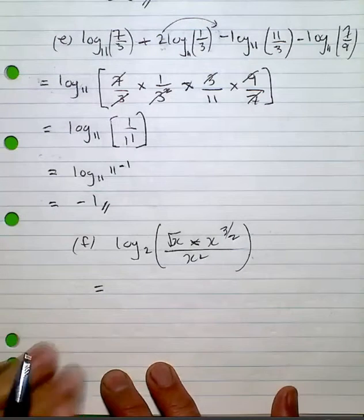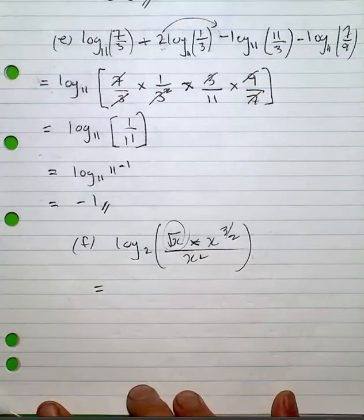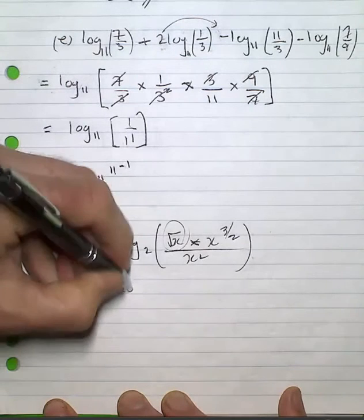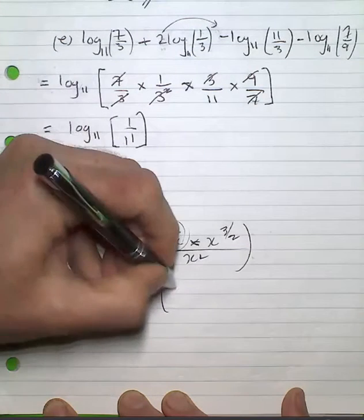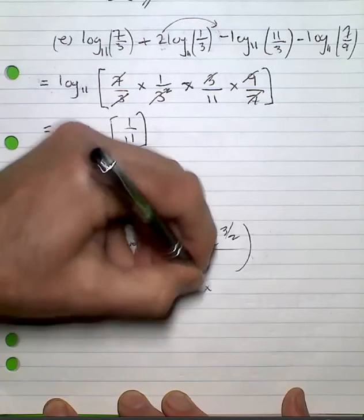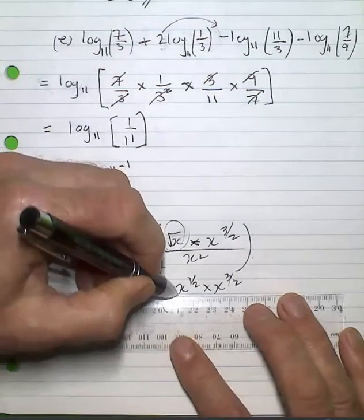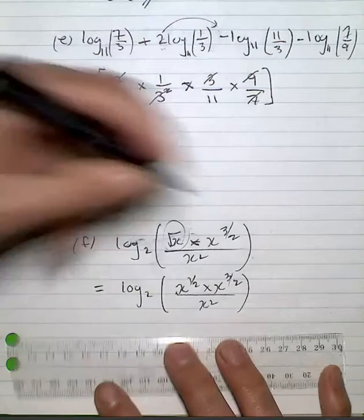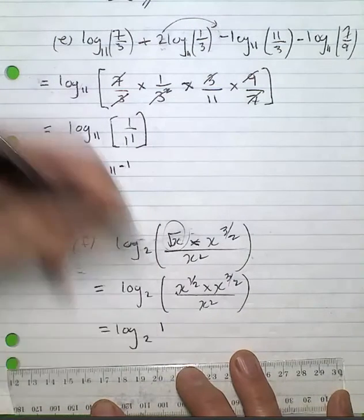Now, the next problem, you notice I'm left with a surd form. I'll change that to a fractional index. So everything there to the log base 2 of x to the 1/2 times x to the 3/2 divided by x squared. And I hope you can see that that cancels down to log base 2 of 1.